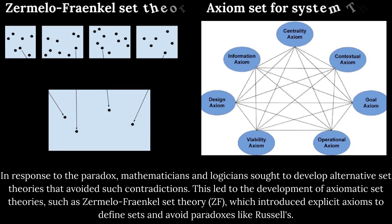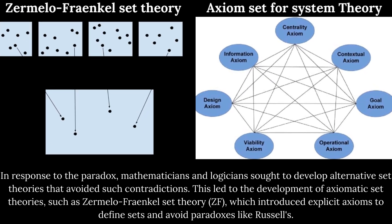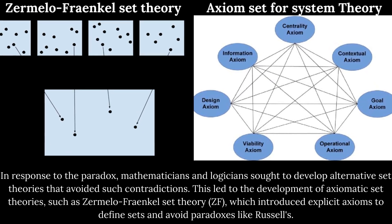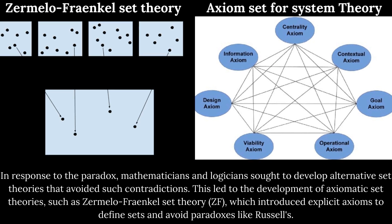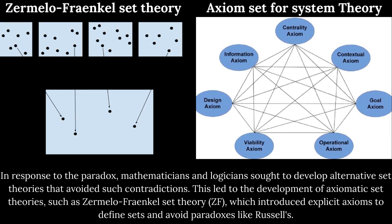In response to the paradox, mathematicians and logicians sought to develop alternative set theories that avoided such contradictions. This led to the development of axiomatic set theories, such as Zermelo-Fraenkel set theory (ZF), which introduced explicit axioms to define sets and avoid paradoxes like Russell's.